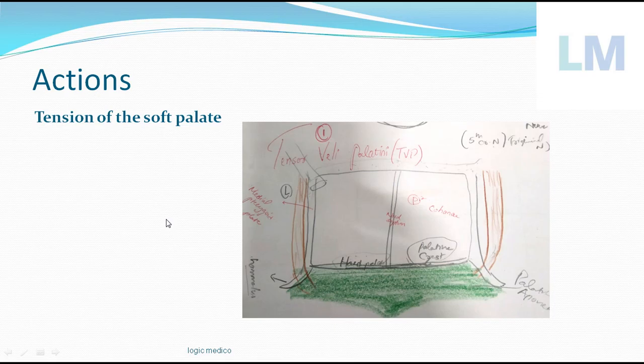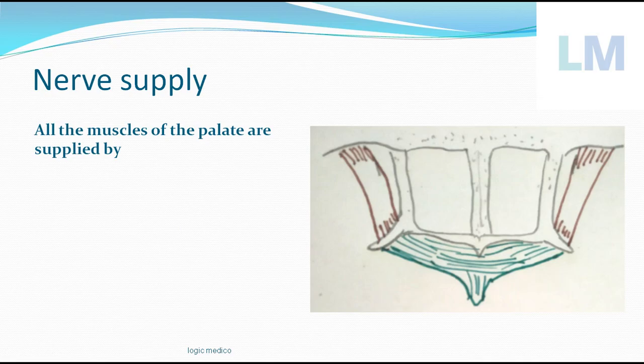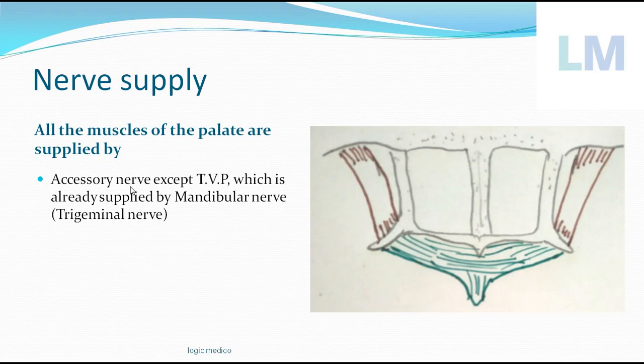In velopharyngeal incompetence, more of the voice comes from the nose rather than the mouth. That is the importance of tensor veli palatini: it creates tension within the soft palate so that the soft palate cuts off the connection between the nasopharynx and oropharynx. All muscles of the palate are supplied by the accessory nerve (11th cranial nerve), except this muscle.